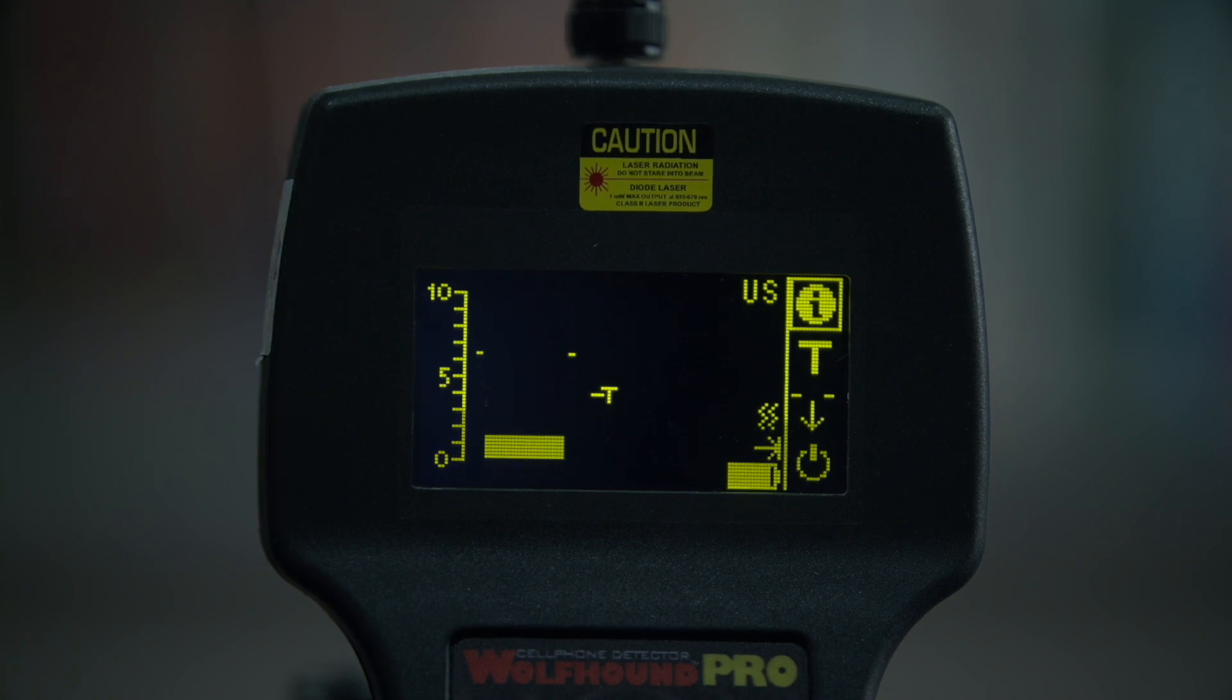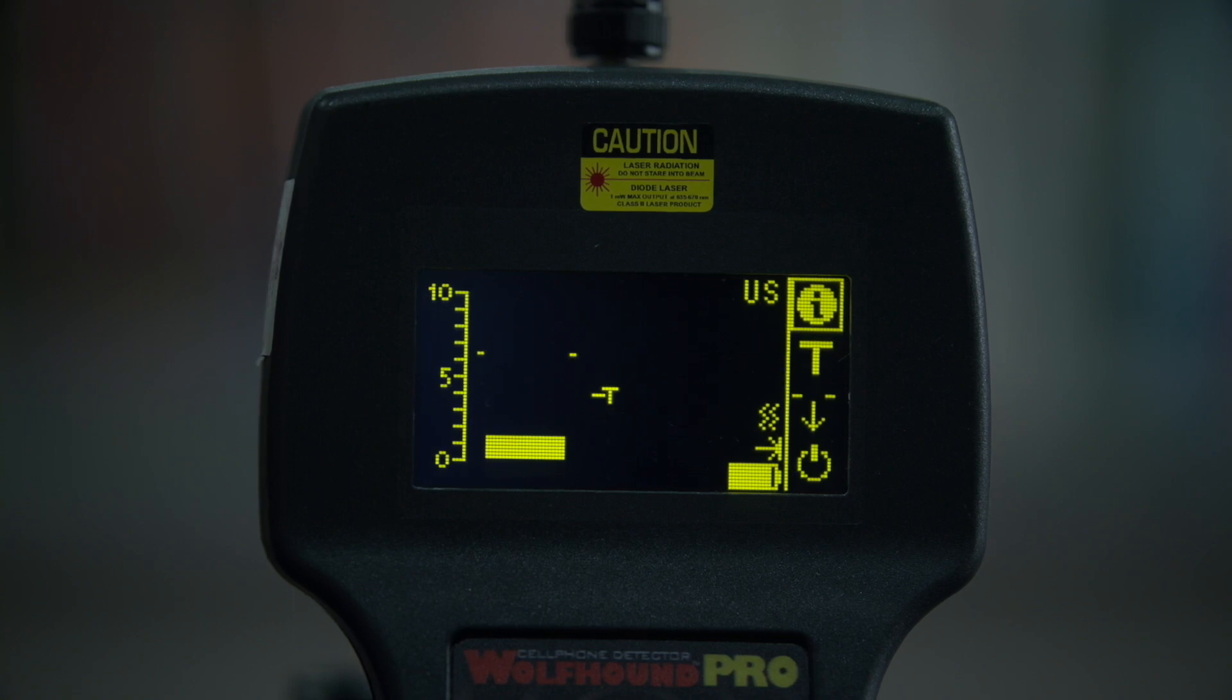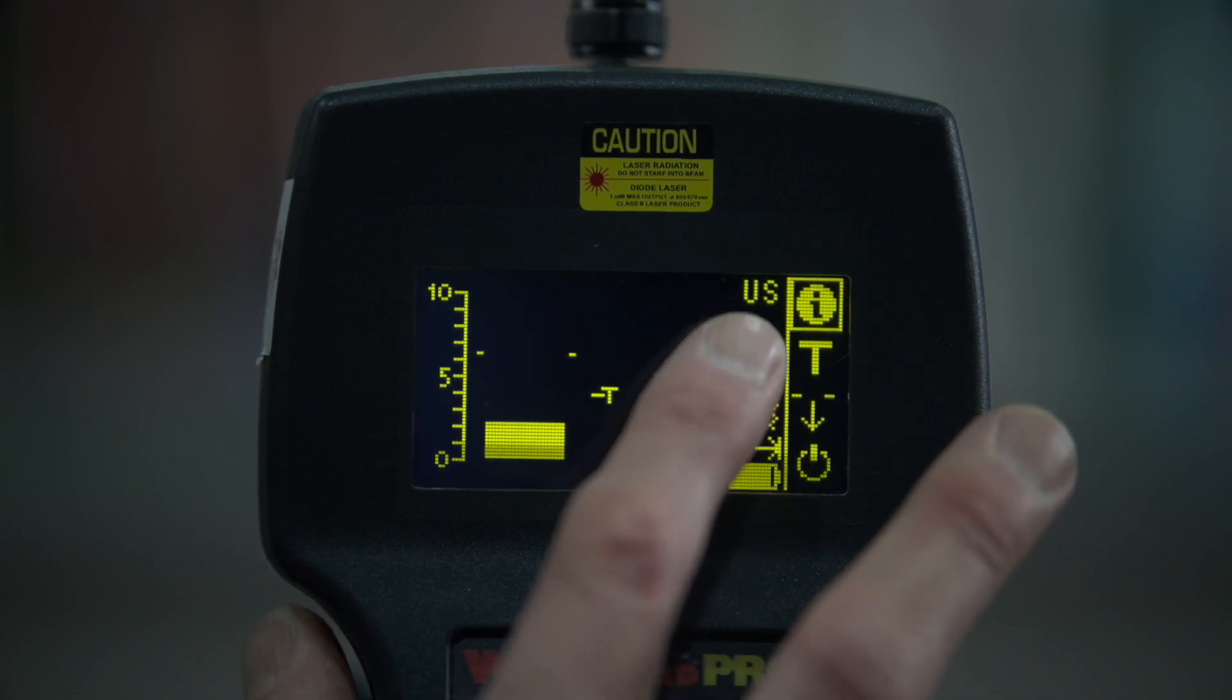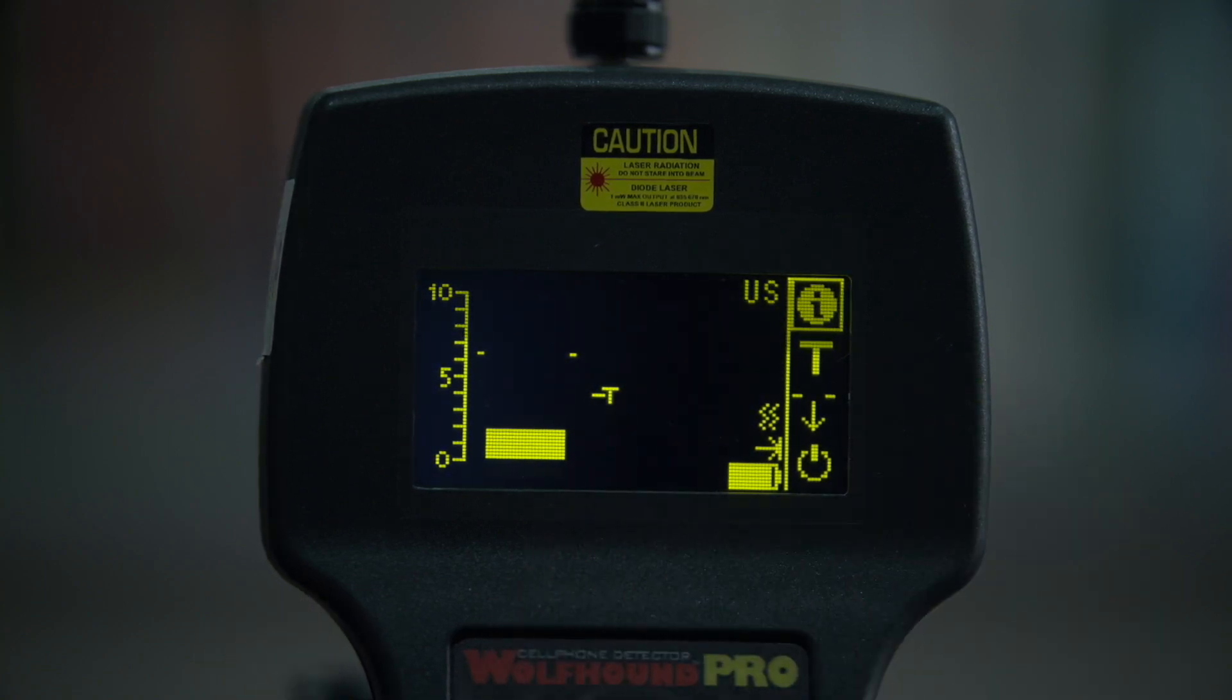Attach the omnidirectional antenna to the Wolfhound Pro and turn it on. Make sure it is set to the correct country code. You will have to determine the range of your Wolfhound Pro cell phone detector. This will involve experimentation on your part.